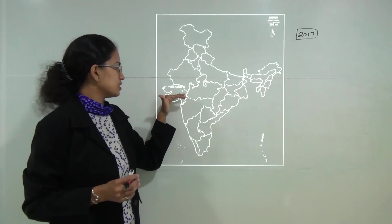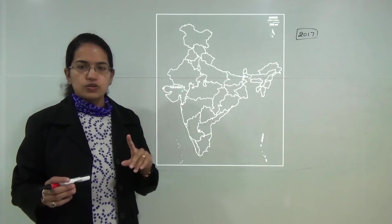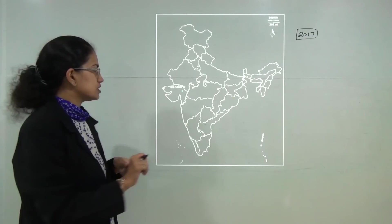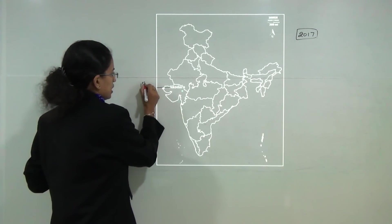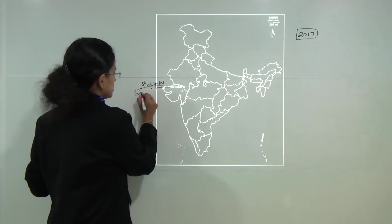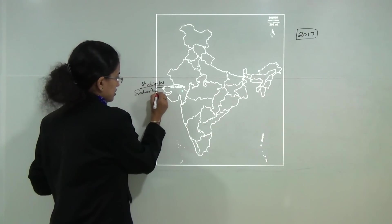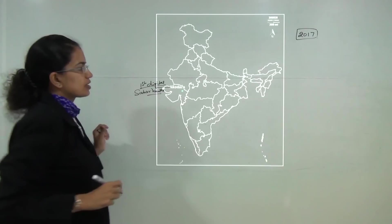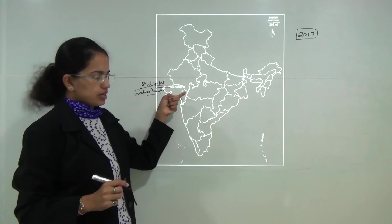The first important location is Akodara. Akodara is India's first digital village and it has been established. This village lies in Sabarkantha district in Gujarat. So, the first location is Akodara.